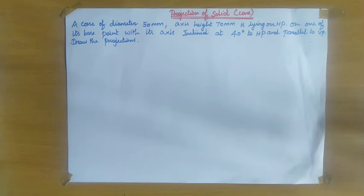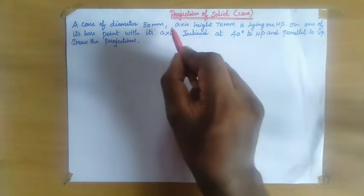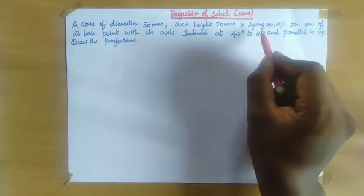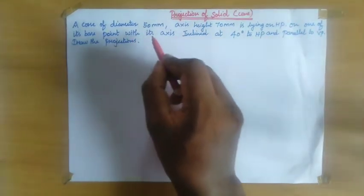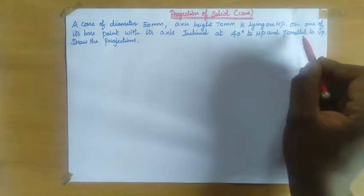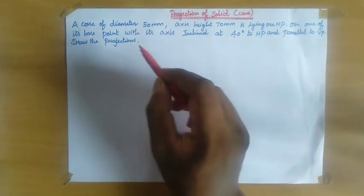Welcome to JazTalks. In this video, we are going to see how to draw the projection of solids in engineering drawing. First, read the question: A cone of diameter 50 mm and axis height 70 mm is lying on HP on one of its base points, with its axis inclined at 40 degrees to HP and parallel to VP. Draw the projections.